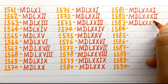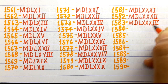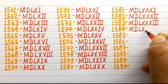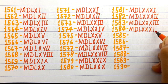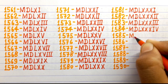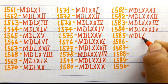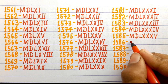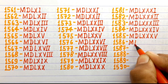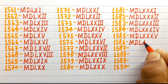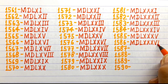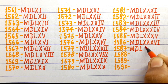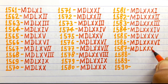1583 MDLXXXIII, 1584 MDLXXXIV, 1585 MDLXXXV, 1586 MDLXXXVI, 1587 MDLXXXVII.